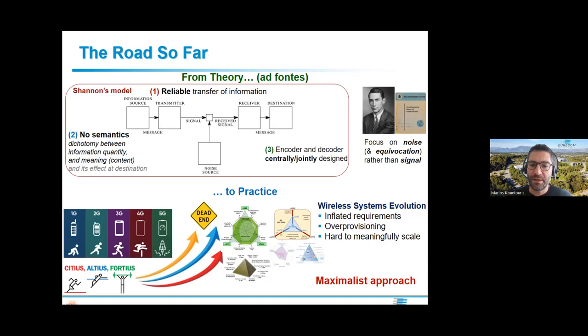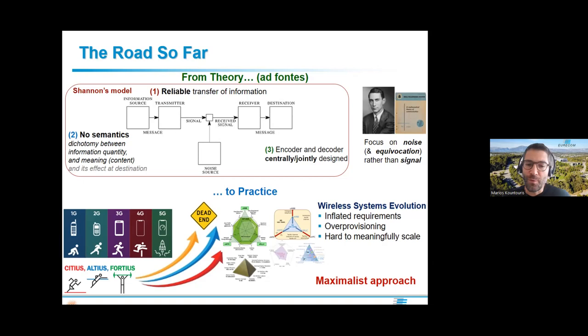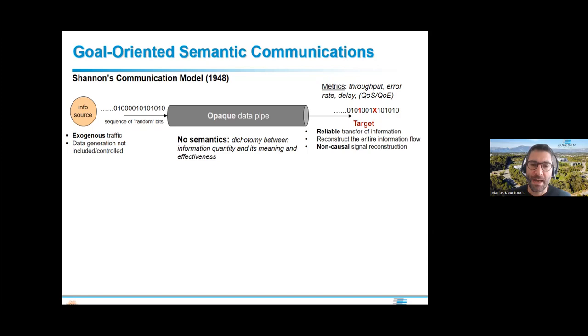Every generation is driven by inflating requirements: take the previous generation, multiply by 10, and you have your new metrics. We go to higher frequencies, 10 or 100 times more rate, from one millisecond to even less latency, and so on. My claim is that going this way it's hard to meaningfully scale, especially for point-to-point links where we are very close to fundamental limits. This is where goal-oriented semantic communication has something to say.